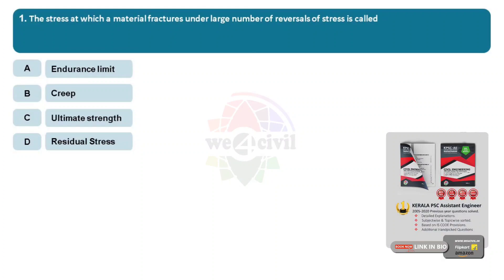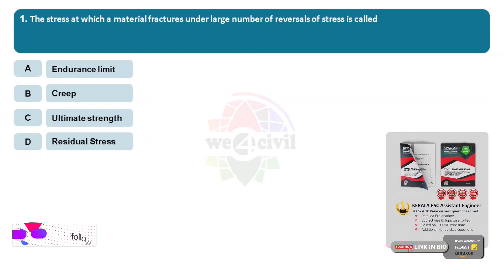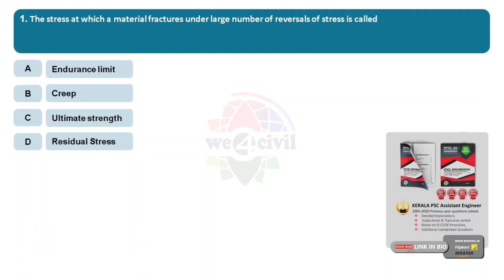We are going to ask questions. The first question: The stress at which a material fractures under a large number of reversals of stress is called? Option A, endurance limit. B, creep. C, ultimate strength. D, residual stress. Answer: Option A, endurance limit.